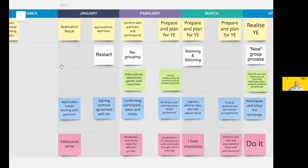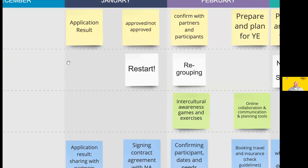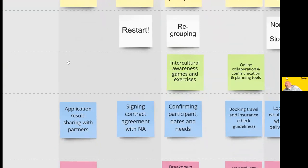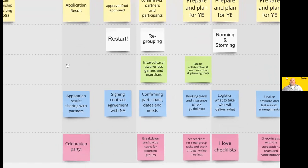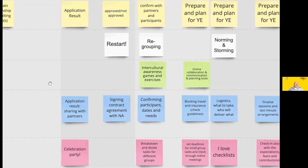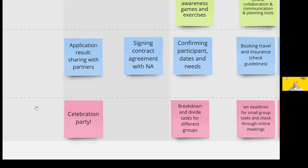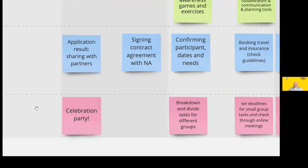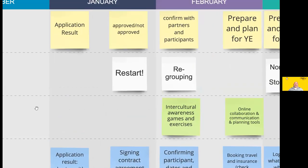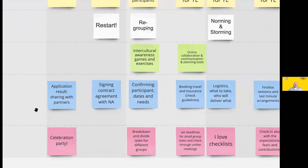After two to three months you'd get the result from the national agency, then share that result with partners. If approved, have a little celebration party — I also suggest a small celebration at submission too, since that can be stressful. Then for the lead applicant group, it's the process of signing the contract and agreement with the national agency.